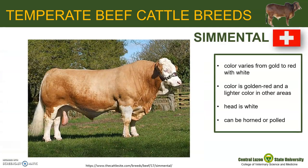Next is Simmental. The name Simmental is derived from the name of the area where the cattle were first bred, the Simme Valley, which is in Switzerland. The color varies from gold to red with white and may be evenly distributed or clearly defined in patches on a white background. The head is white, and the majority have pigment around the eyes, helping to reduce eye problems from bright sunlight. Simmental can be horned or polled.